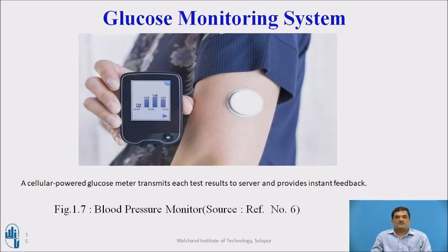The next application is the glucose monitor system. A cellular-powered glucose meter transmits each test result to a server and provides instant feedback. This device is attached to the body, continuously senses pulses, and sends information to the server, which provides instant feedback to the doctor. Through this server, the current glucose level of the patient can be retrieved.